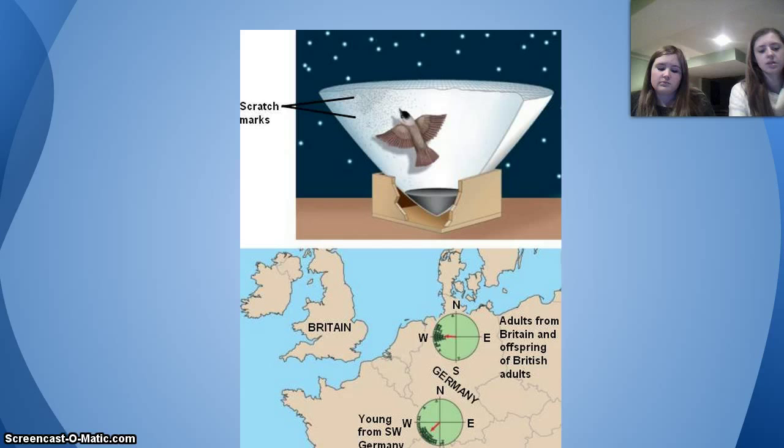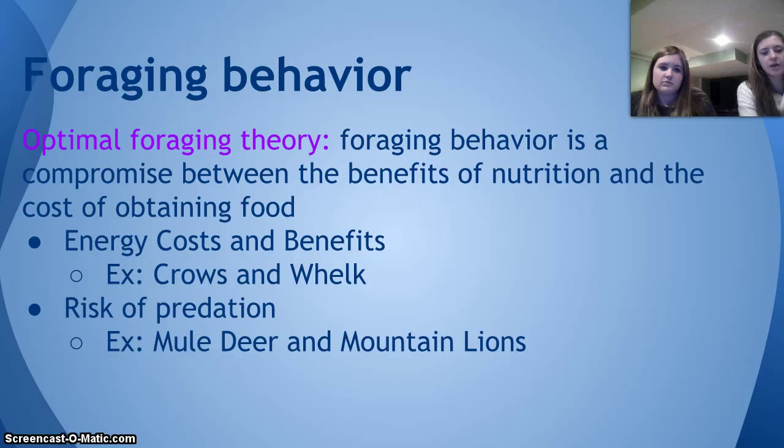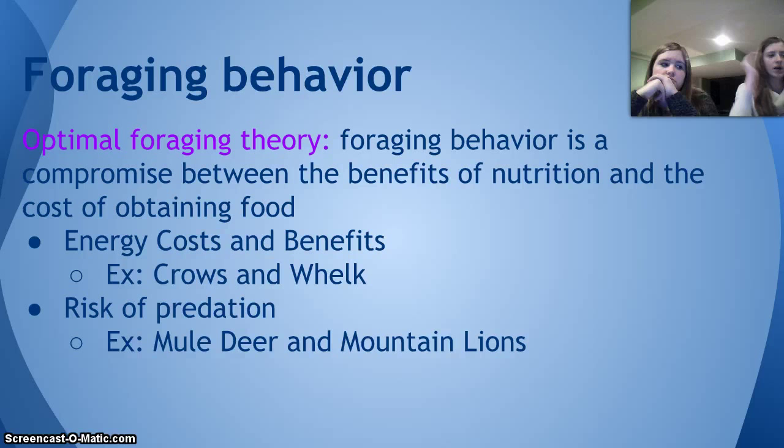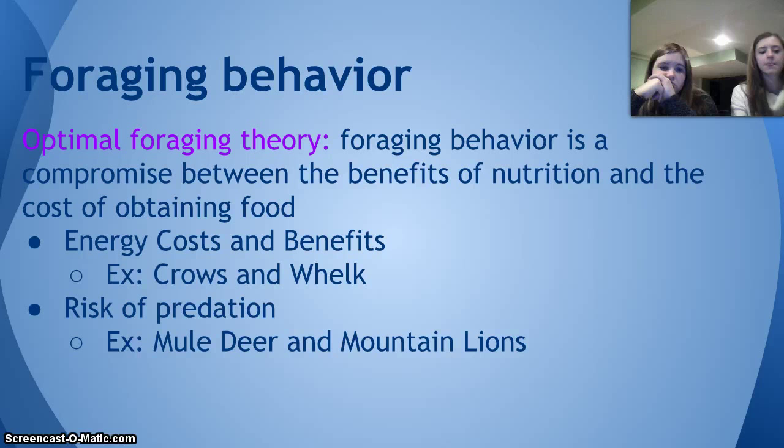There is optimal foraging behavior. Foraging theory describes foraging behavior as a compromise between the benefits of nutrition and the cost of obtaining food, considering energy costs and benefits. For example, crows must fly up and drop a whelk to crack it open, so they go to the height that is most beneficial — cracking it on the first drop without expending too much energy flying too high. For risk of predation, since mountain lions live in the fringes, mule deer avoid the fringes and stay mostly in the meadows.